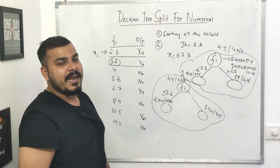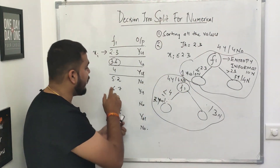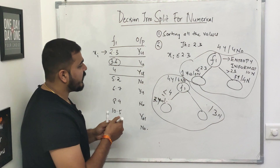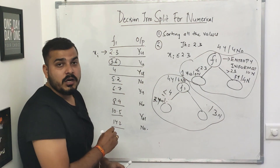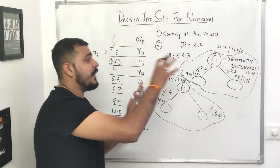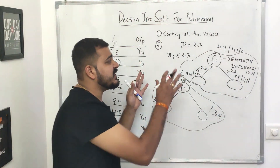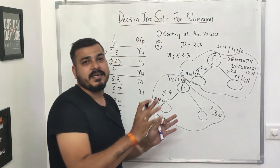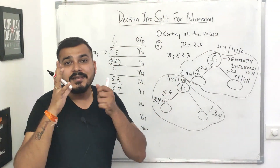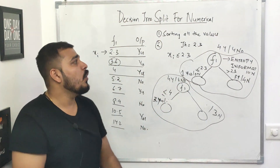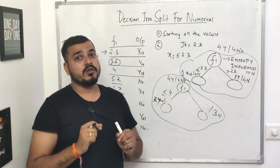This kind of division happens for each and every feature and each and every Xi value. Simultaneously, entropy and information gain are calculated, and whichever has the best value determines which split is taken. This is how the decision tree split works for numerical variables.